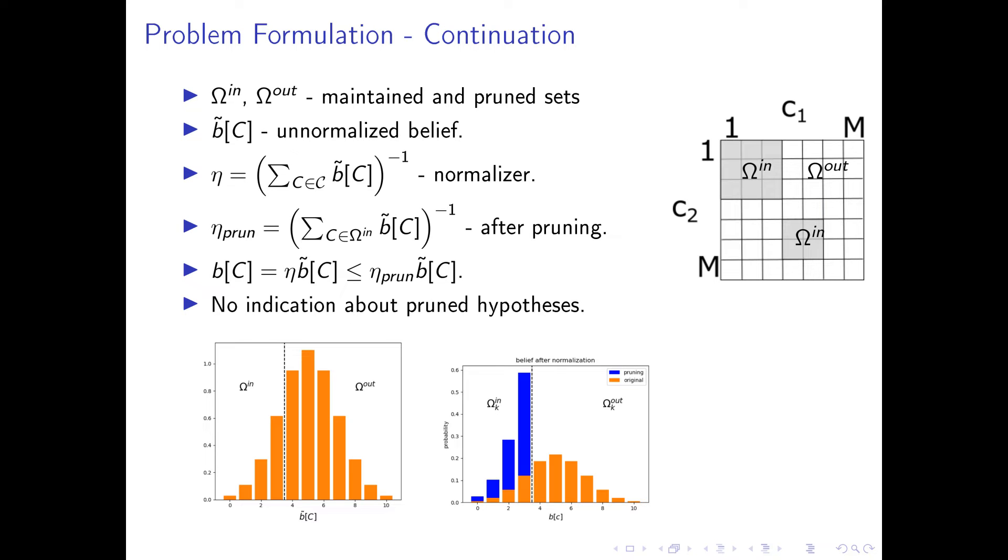Let's consider omega in to be the maintained hypotheses and omega out to be the pruned hypotheses. B tilde is an unnormalized belief, and in order to get the normalization factor eta, we need to sum over all the details.